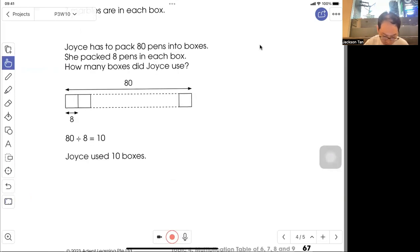Some more questions. Joyce has to pack eighty pens into boxes. She packed eight pens in each box. Sorry, it's pen. How many boxes did Joyce use? So this is the model, total eighty, one box eight. So how many boxes?